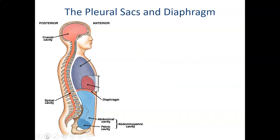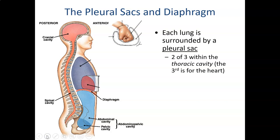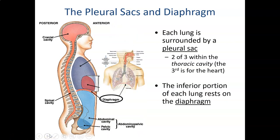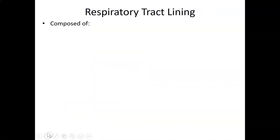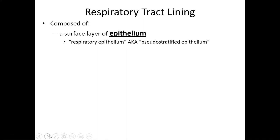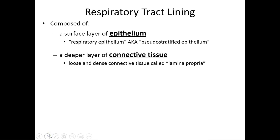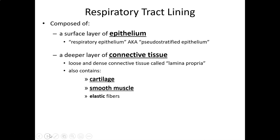The lungs are contained in pleural cavities on either side of the heart and surrounded by a membrane called the pleura, or pleural sac. Much like the pericardium, the pleura are double-walled membranes that prevent friction between the lungs and surrounding structures. The lining of the respiratory tract throughout the system is mostly pseudostratified epithelium with a connective tissue backing, and throughout the majority of the tract you'll see cartilage, smooth muscle, and elastic fibers.